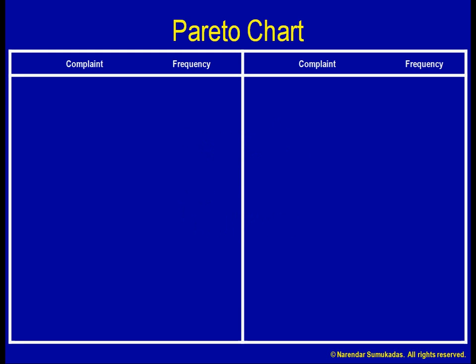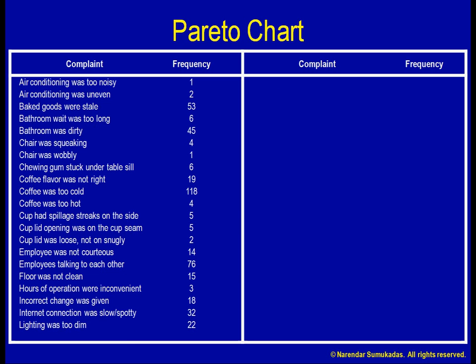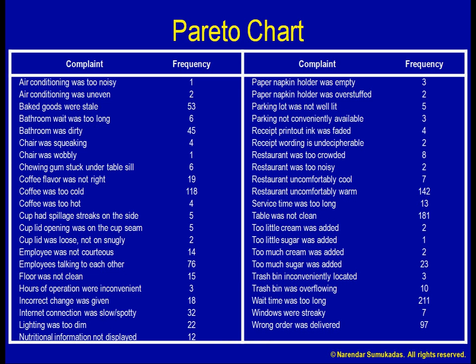Consider the following example. Let us say I am looking into resolving customer complaints at my coffee shop. I make a list of the different types of customer complaints that I usually receive, and collect data over a 2-month period regarding these complaints. I am simply going to track the number of times that each type of complaint occurs. The final data are as shown here, with the complaints listed in alphabetical order. A total of 1,191 complaints were recorded, with 43 different types of complaints.